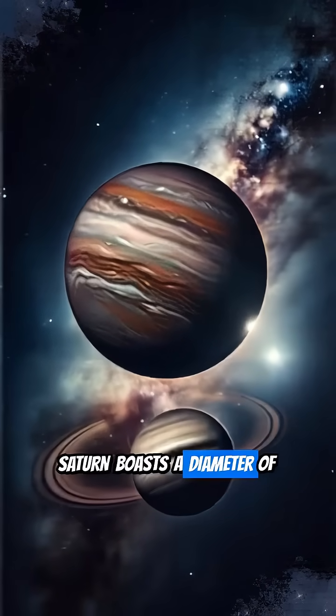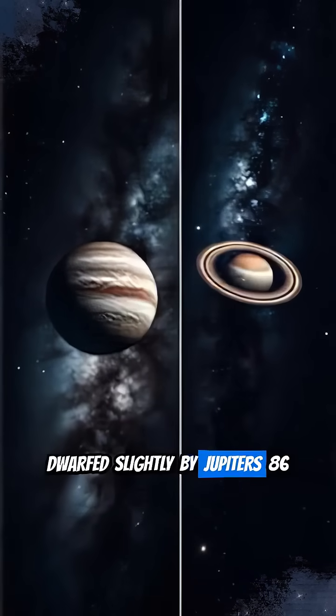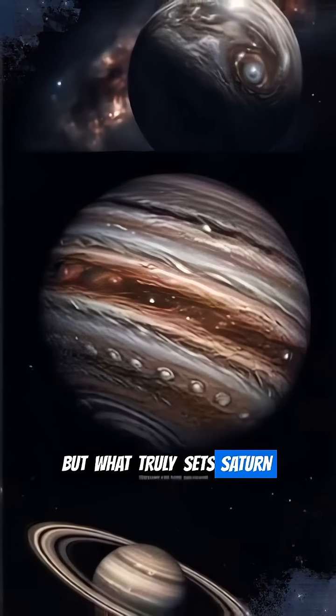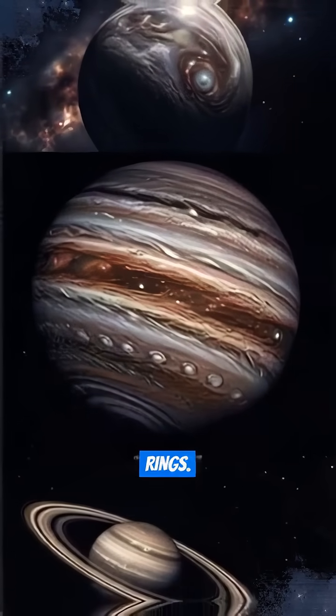Saturn boasts a diameter of over 72,000 miles, dwarfed slightly by Jupiter's 86,000 miles, which, by the way, could hold over 800 Earths. But what truly sets Saturn apart are its breathtaking rings.